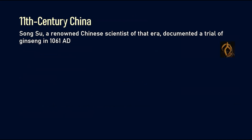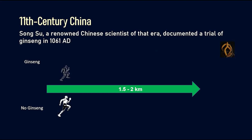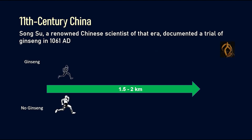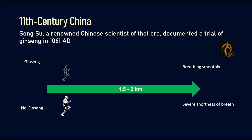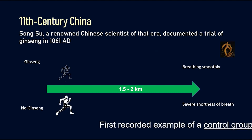Fast forward to the 11th century, when a gentleman named Song Su, a renowned Chinese scientist of that era, documented a trial of ginseng in 10,061 AD. He recruited two people — one was given ginseng and another was not — and they were asked to run 1.5 to 2 kilometers. The person who received ginseng had no breathing problem, whereas the person who did not receive ginseng developed severe shortness of breath. This is considered the first recorded example of a control group.